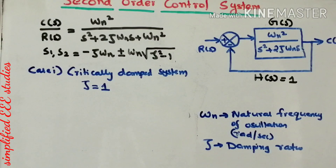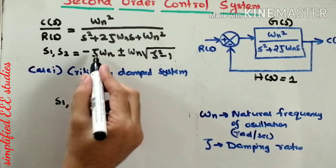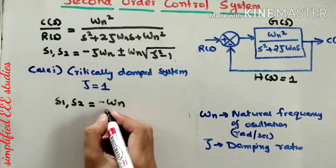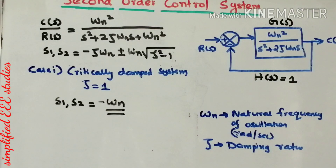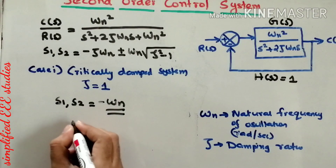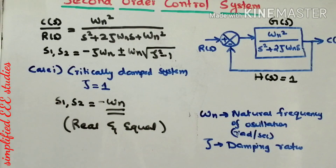For Case 2, the critically damped system where zeta equals 1: substituting, the square root term becomes zero, and the roots simplify to minus ωn. The roots are real and equal. Although technically only one distinct root exists, we say the two roots are real and equal — that is the characteristic property of a critically damped system.